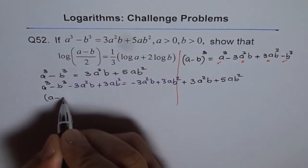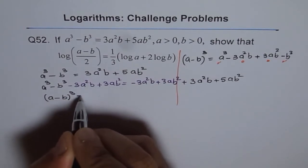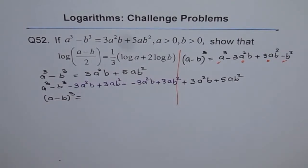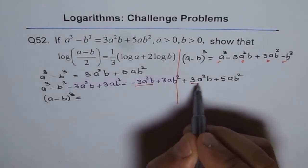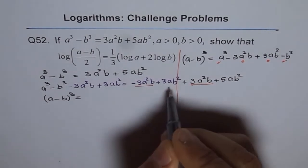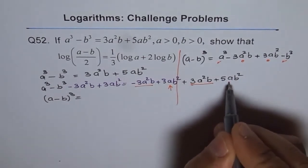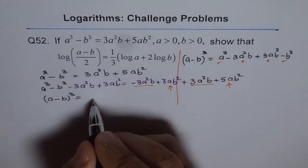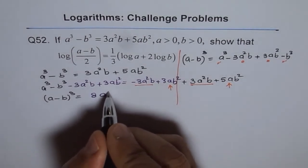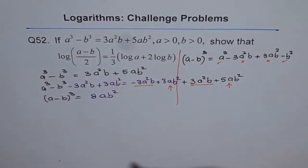So, let's write down this as a minus b whole cube equals to what is the right side? Minus 3a square b and plus 3a square b cancel out and we are left with 3ab square and 5ab square. So, when you add them, you get 8ab square. So, you get 8ab square on the right side.